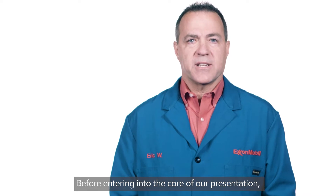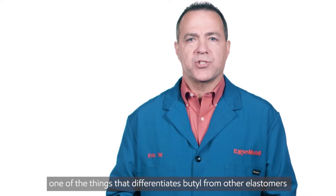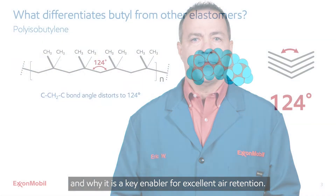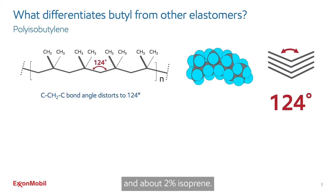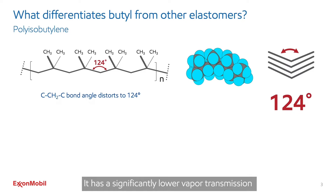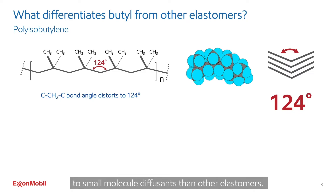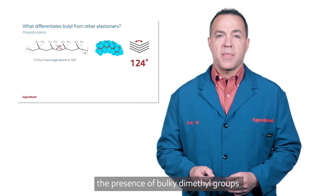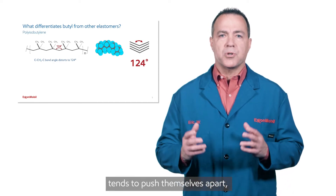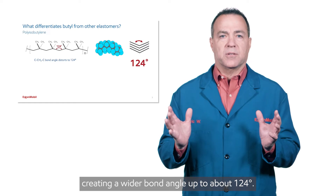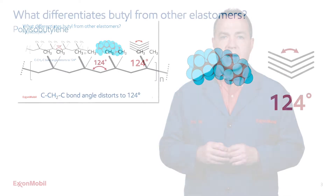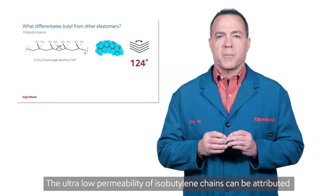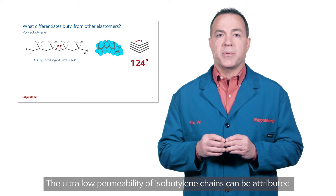Before entering into the core of our presentation, let me summarize one of the things that differentiates butyl from other elastomers and why it is a key enabler for excellent air retention. Butyl rubber is a copolymer of isobutylene and about 2% isoprene. It has a significantly lower vapor transmission to small molecule diffusants than other elastomers. For isobutylene-based polymers, the presence of bulky dimethyl groups tends to push themselves apart, creating a wider bond angle up to about 124 degrees. This enables tighter packing, as we can see in the diagram on the right. The ultra-low permeability of isobutylene chains can be attributed to its high packing density.